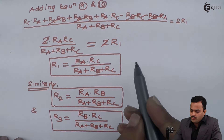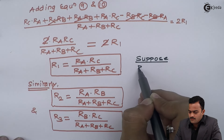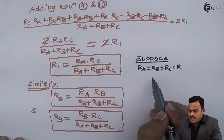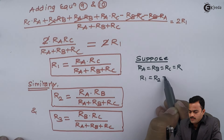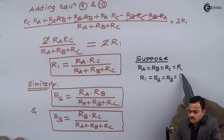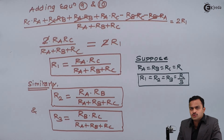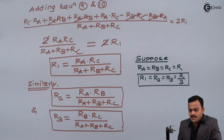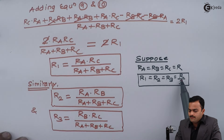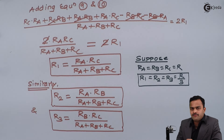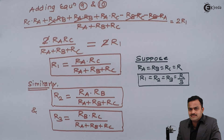Here is one special case: suppose all the resistors are of the same value R. Then in the corresponding equivalent star you will get all R1, R2, and R3 of the same value given by R/3. Many times we use this because if resistors are given in delta or star having the same value, instead of using the full formula you can simply use R/3. So here we have come to the end of this derivation where we have converted a delta connected circuit into equivalent star. Thank you.